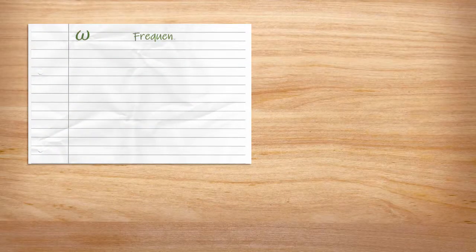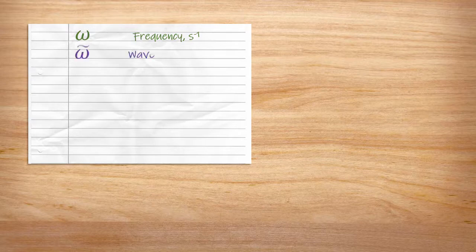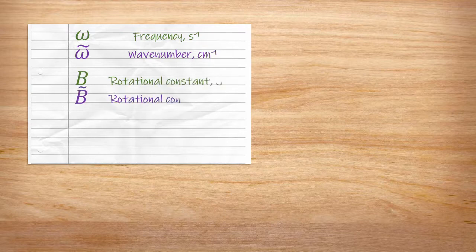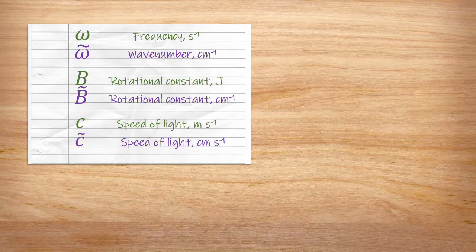To clarify the notation here, we normally use omega for rotational frequencies and omega with a tilde on top to represent wavenumber. This tilde also crops up on the rotational constant to clarify that it's measured in wavenumbers, and also on the speed of light to clarify that we want the speed in centimetres per second.